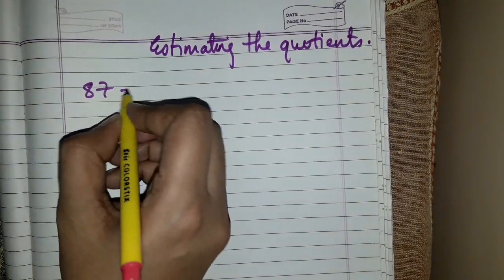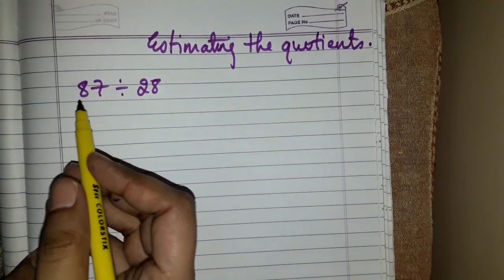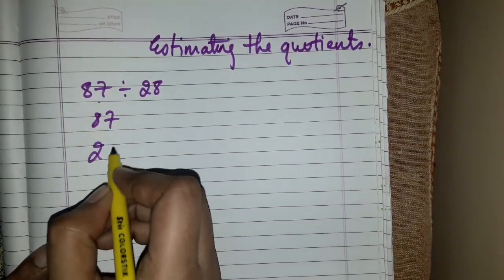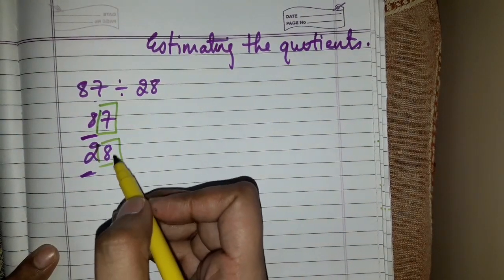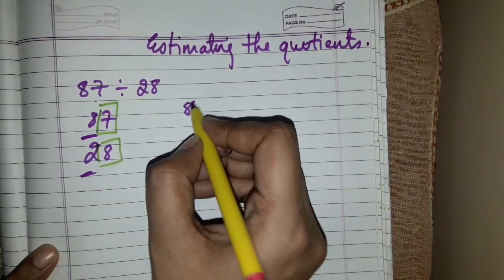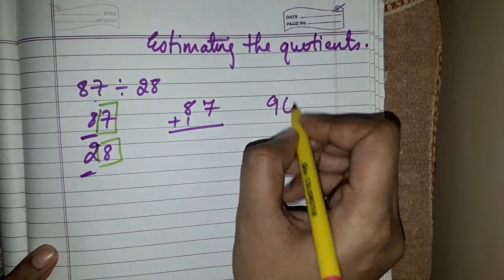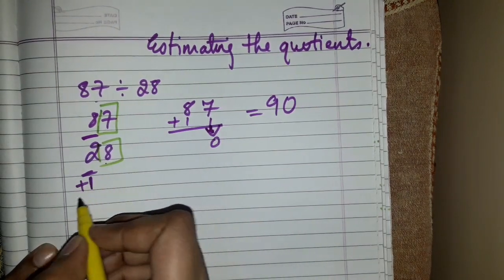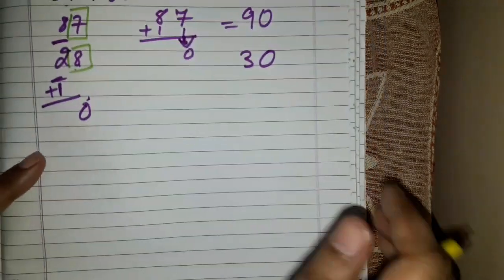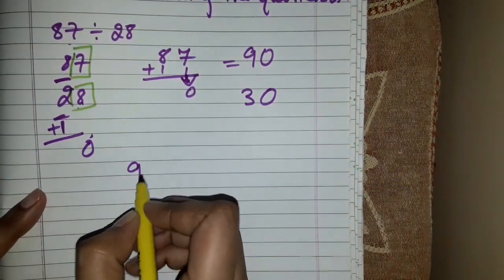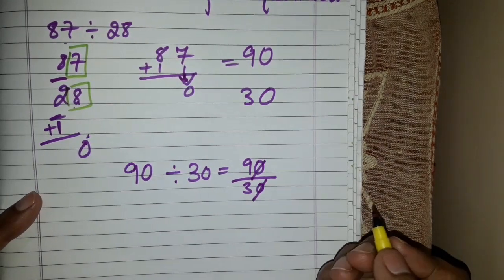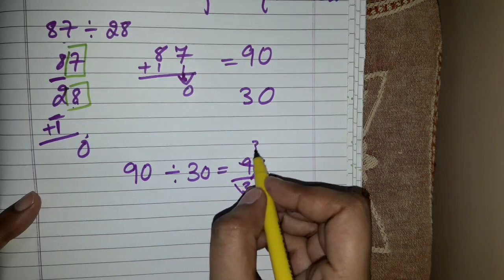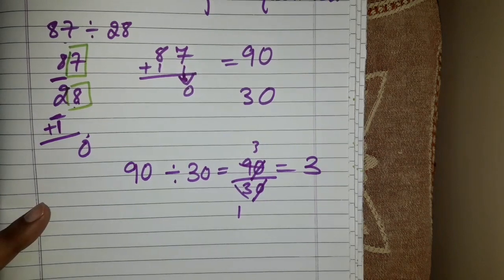First example: 87 divided by 28. Both are two-digit numbers, so round to nearest tens place. 7 is greater than 5, so 87 rounds to 90. 8 is greater than 5, so 28 rounds to 30. Now divide 90 by 30: cancel the zeros, and 9 divided by 3 equals 3. So the answer is 3.